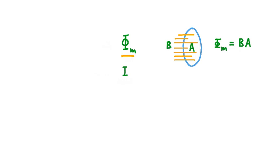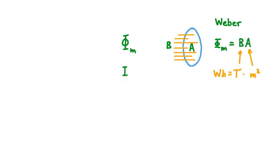It's worth saying a quick word about the units of magnetic flux, because this will come up in example exercises. The SI base units of magnetic field are Teslas, capital T, and the base unit of area is meters squared. So magnetic flux is measured in Tesla-meters squared, and the name for that simplified unit is the Weber. Each Weber is equal to one Tesla times a meter squared.